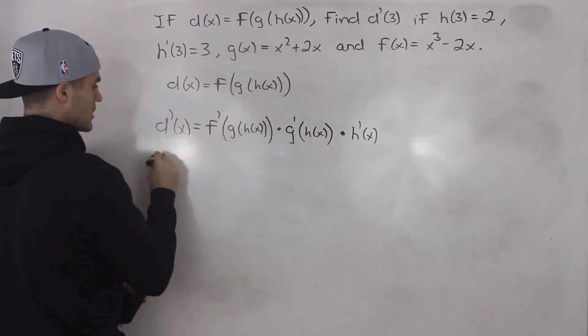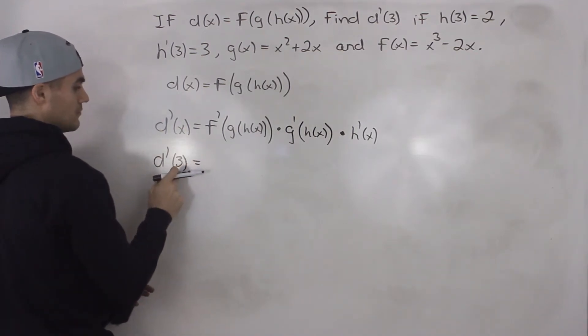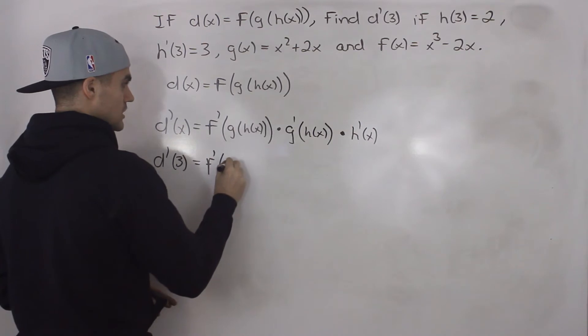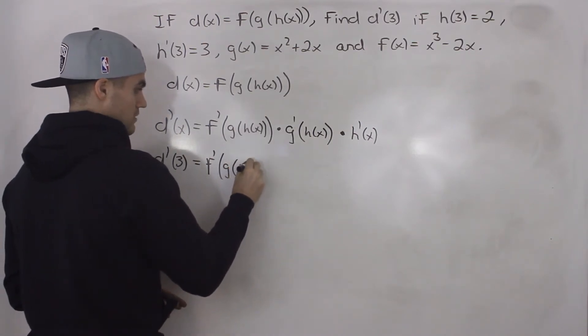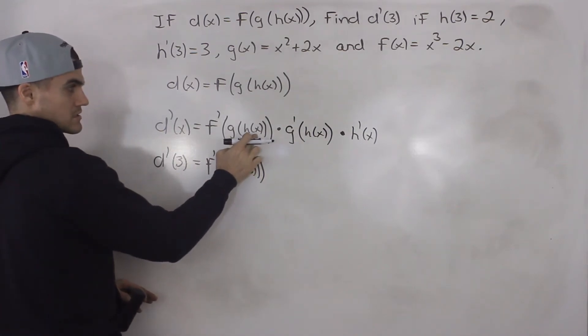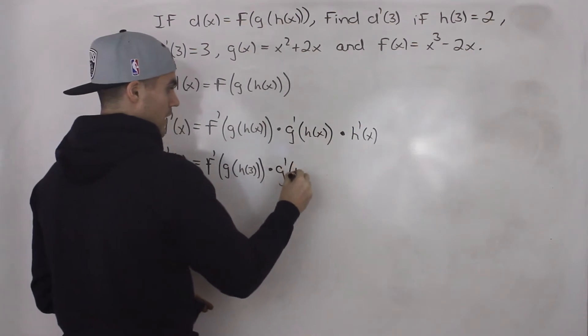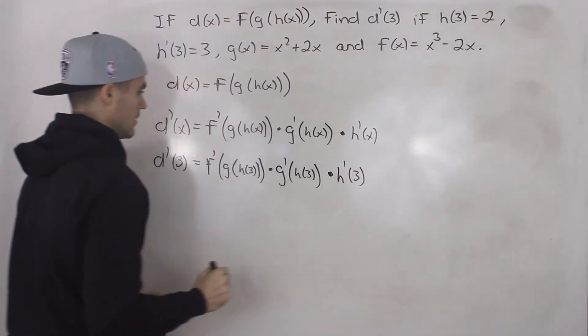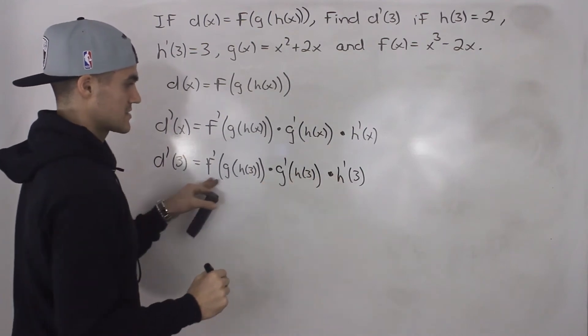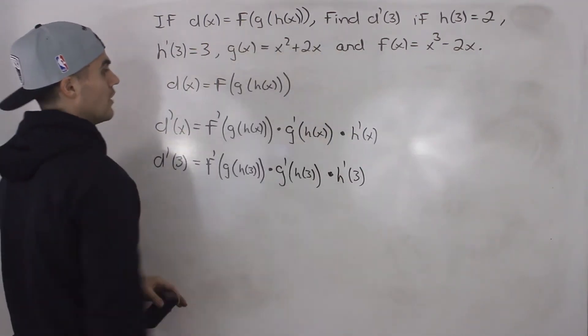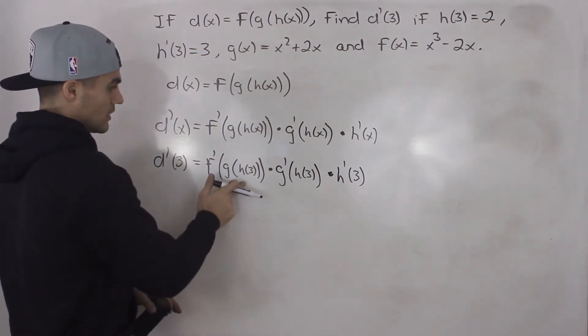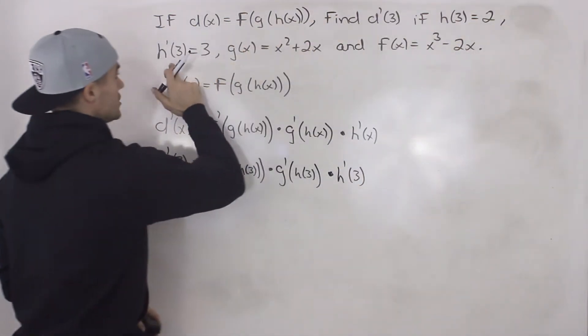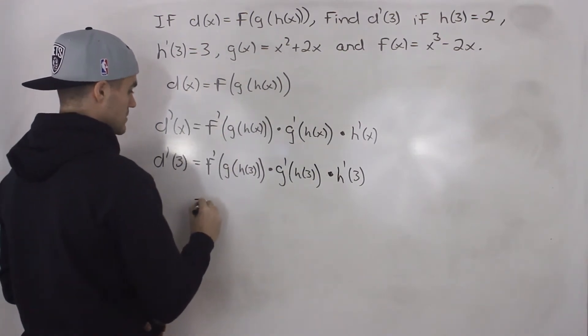We have to find d prime of 3. So basically, we're going to have to plug in an x value of 3 for all the x values in this expression. So we'll have f prime of g of h of 3, right? So I plugged in an x value of 3 in this x times g prime of h of 3 times h prime of 3. Okay, so we've got to figure out what's this expression going to equal given the rest of the information. Well, notice that we're given a bunch of these h(3)s here and then this h prime 3. And we know that h(3) is equal to 2 and h prime 3 is equal to 3. So we can make some substitutions here.